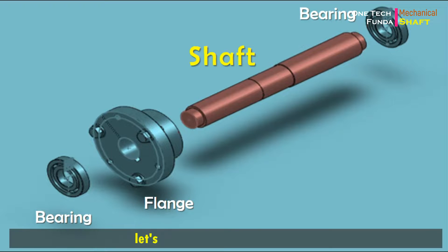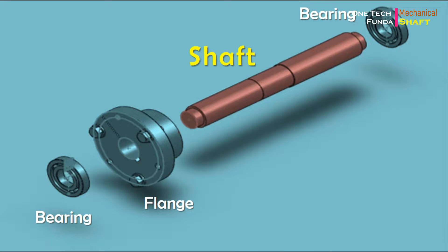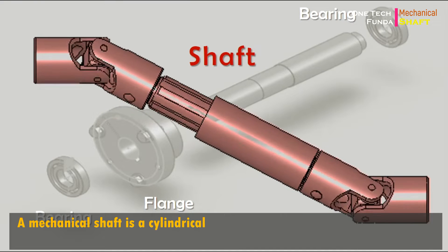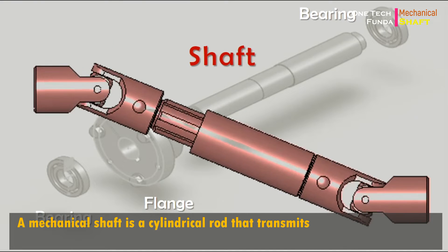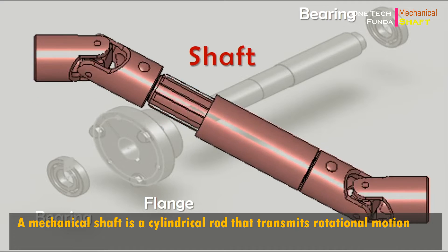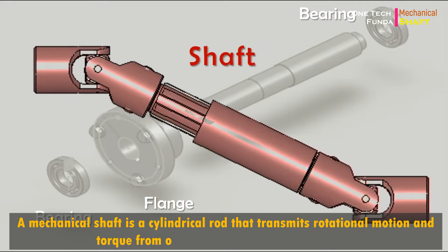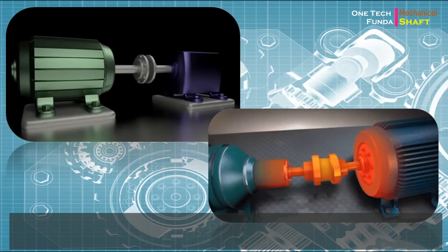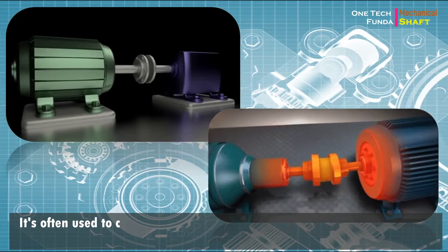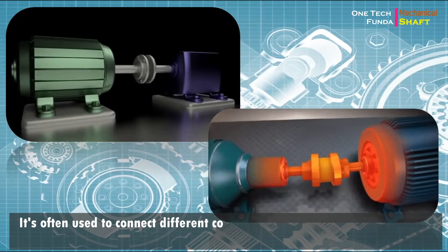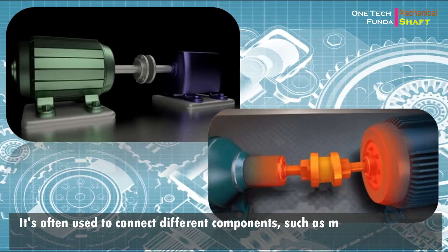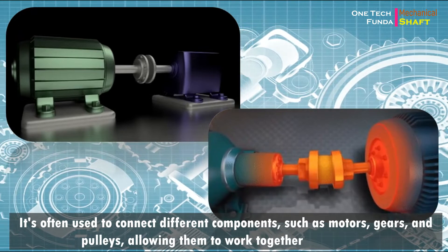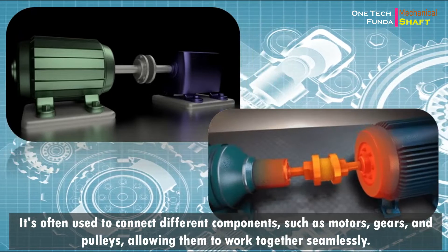Let's understand what is a shaft. A mechanical shaft is a cylindrical rod that transmits rotational motion and torque from one part of a machine to another. It's often used to connect different components, such as motors, gears, and pulleys, allowing them to work together seamlessly.